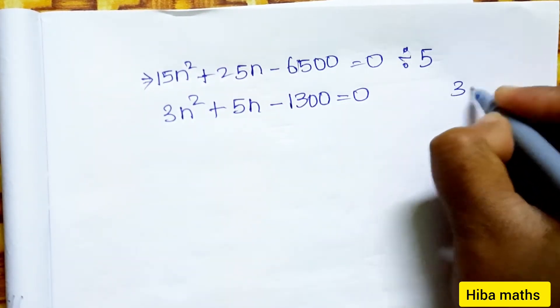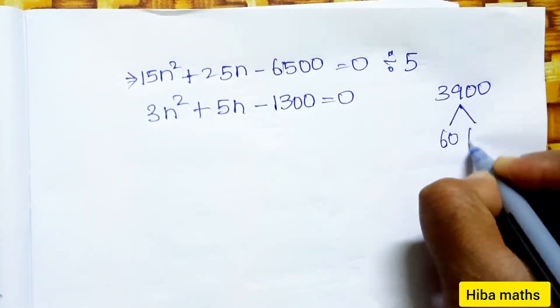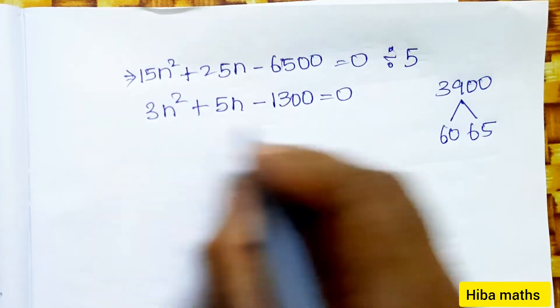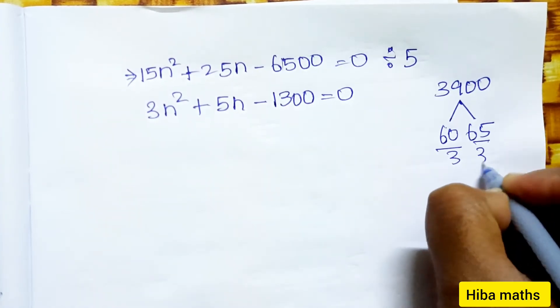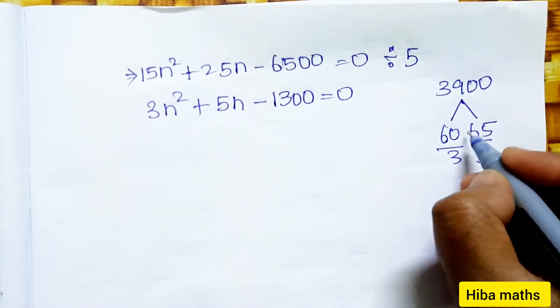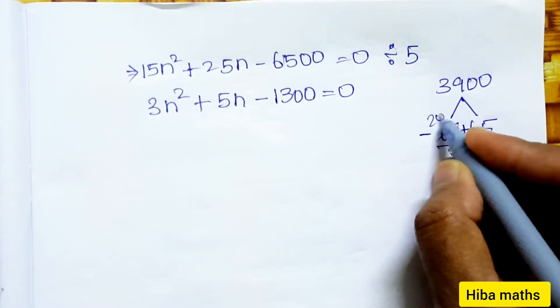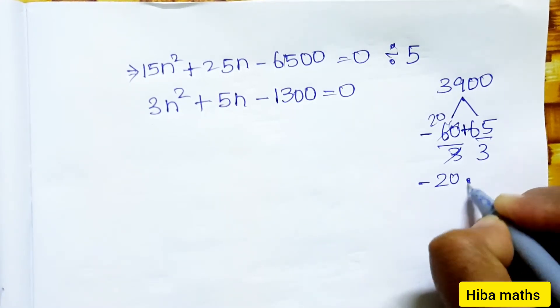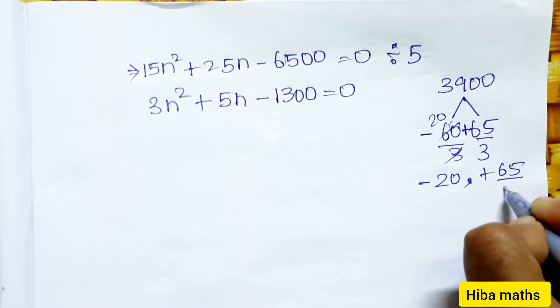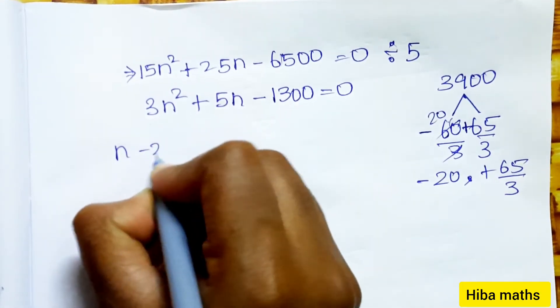Factoring: 3 times 13 = 39, and 60 times 65. Dividing with opposite signs, we get (3n + 65)(n - 20) = 0.